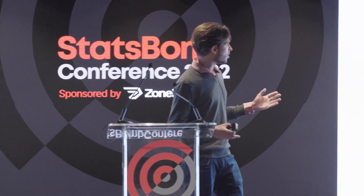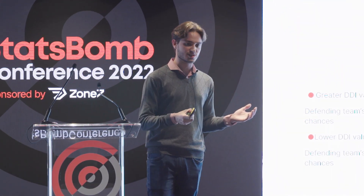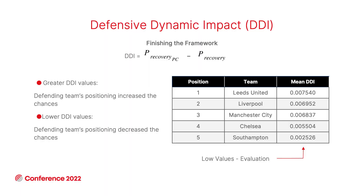Having shown how peer recovery and peer recovery PC differ, we define DDI — the Defensive Dynamics Impact. DDI equals peer recovery PC minus peer recovery. Greater DDI values mean the defending team's position actually increases their chances of getting the ball back, while lower values mean the defending team's position decreases their chances of getting the ball back in that game state.